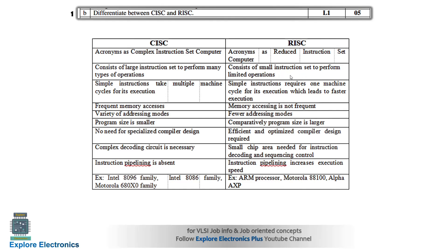In CISC, simple instructions take multiple machine cycles for execution. In RISC, simple instructions require only one machine cycle for execution, so execution is fast in a RISC processor. Frequent memory access occurs in CISC; memory accessing is not frequent in RISC. A variety of addressing modes are in CISC; fewer addressing modes in RISC. Program size is smaller in CISC and comparatively larger in RISC, because with fewer instructions, the same instruction must be used again and again.